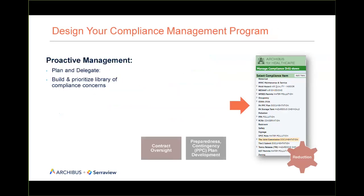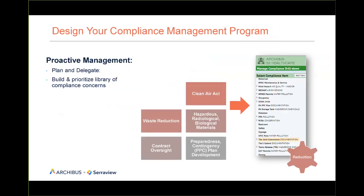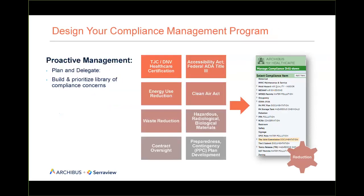It all starts with the compliance management program. As you can see in the screenshot here, we start with the managed compliance drill down, which allows us to organize all of the types of requirements and programs that we as an organization are going to subscribe to. This helps us to plan, prioritize, and catalog all of the things we need to do to ensure that we are compliant — executing the right level of maintenance, inspection, surveys, whatever it might be to the fullest of our ability. Some of the types of regulations we may be adhering to include things like ADA, Joint Commission, Energy Use, Clean Air Act, Waste Reduction — whatever's important to your organization — making sure that we're identifying, tracking, and making those regulations visible and accessible to the people that need them, and using that to drive the processes to ensure compliance.